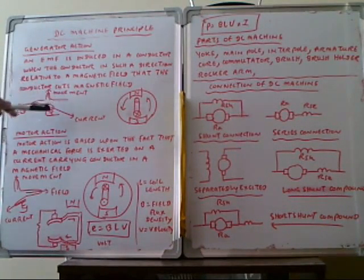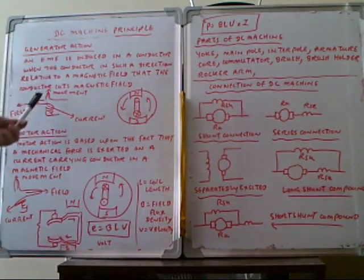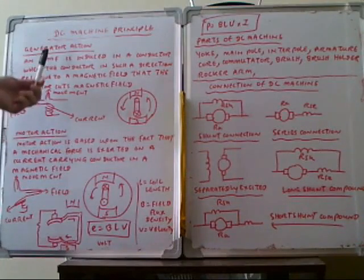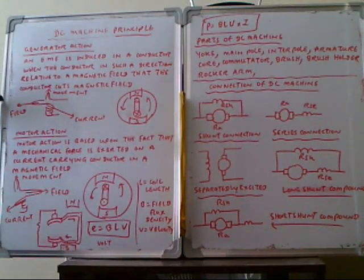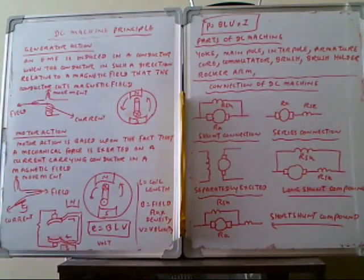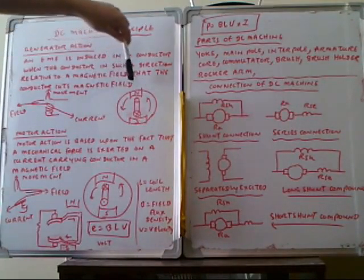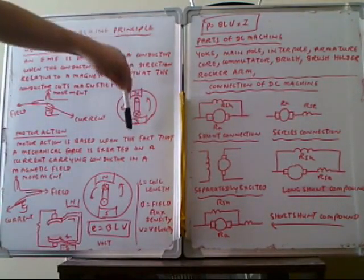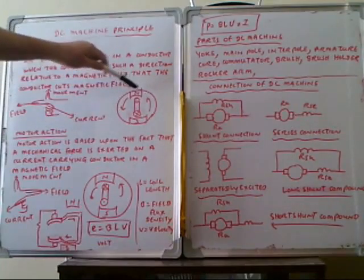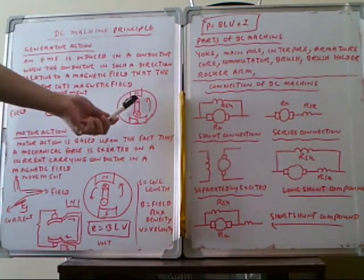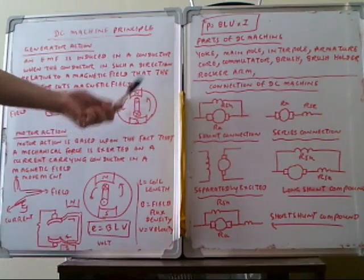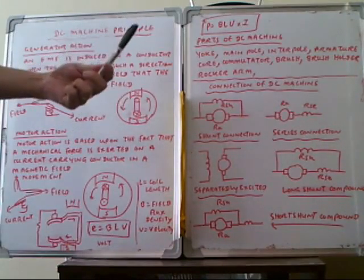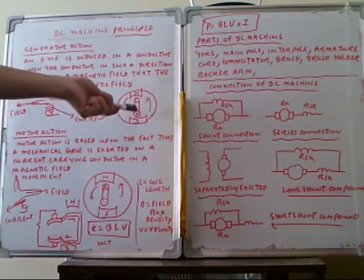For the generator, the first finger points in the magnetic field direction and the thumb direction is the motion. The counter electromotive force is produced under the influence of the magnetic field. The current is produced, and the current direction is indicated by the middle finger. The magnetic field is flowing in the arrow direction, and the dot and cross notation shows current direction — dot means current flowing towards you, cross means current flowing away from you.